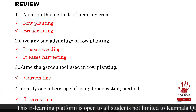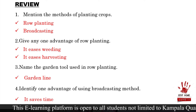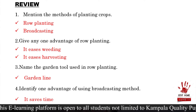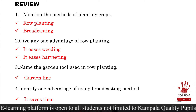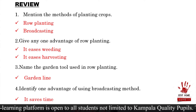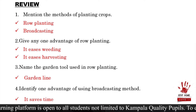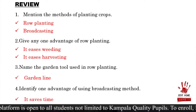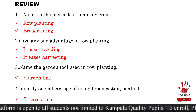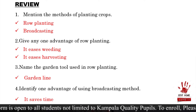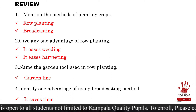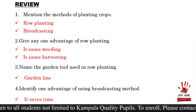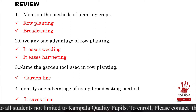Name the garden tool used in row planting. We said we use a garden line, a string which has got a peg. And then you take it to the garden and use it to carry out row planting. Identify one advantage of using the broadcasting method. We said one: it saves time.